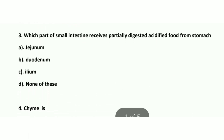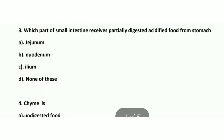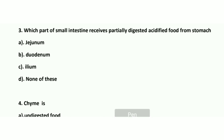Question number 3: Which part of the small intestine receives partially digested acidified food from the stomach? That part of your small intestine is known as the duodenum. Option B.